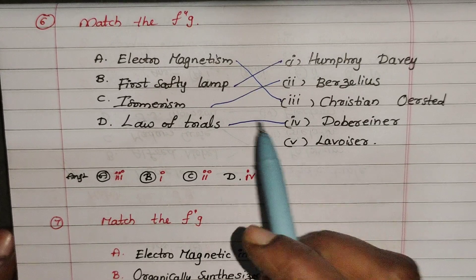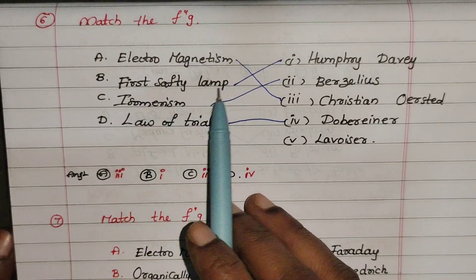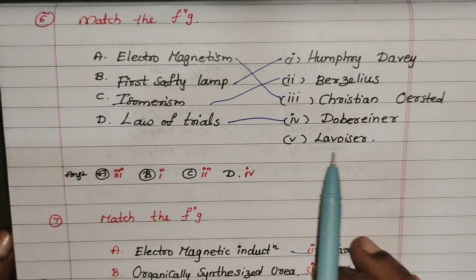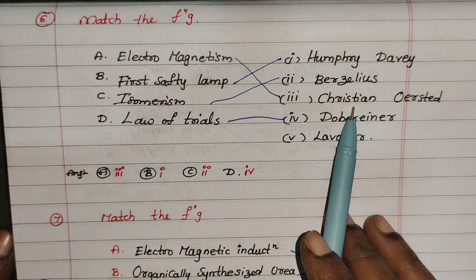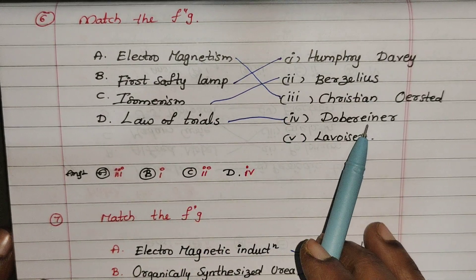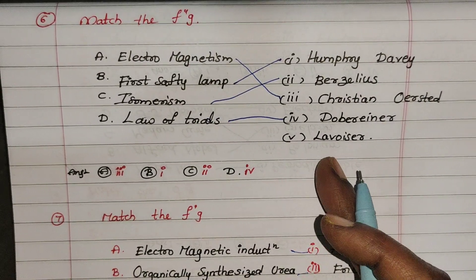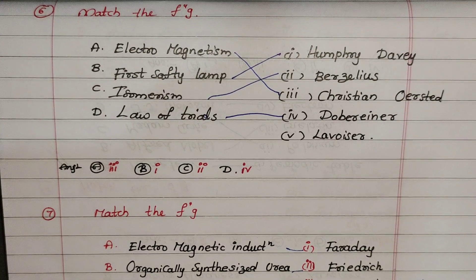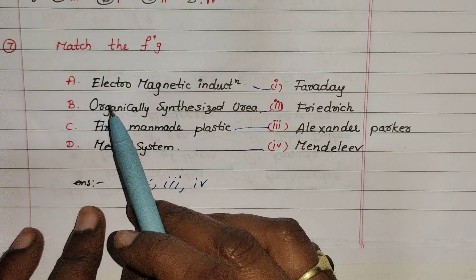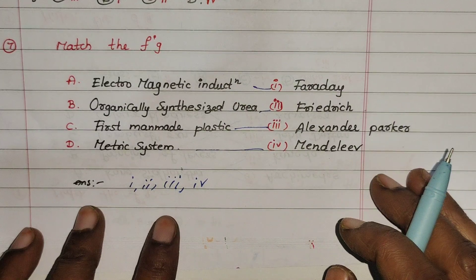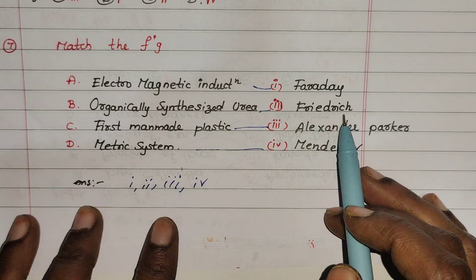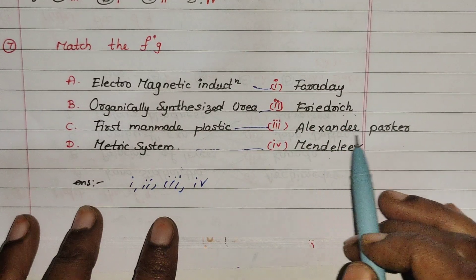Next, 6th question — same concept, scientist name: Electromagnetism, First Safety Lamp, Isomerism, Law of Trials. The scientist's name is Humphrey Davy. Electromagnetic Induction — Faraday. Organically synthesized — Durya/Frederick. First manmade plastic — Alexander Parkes.